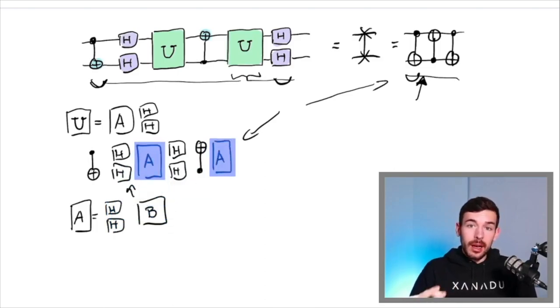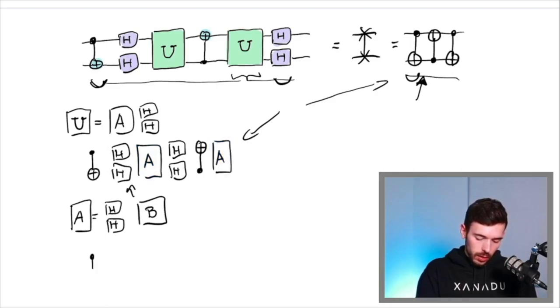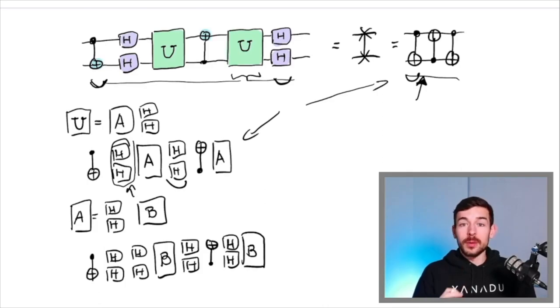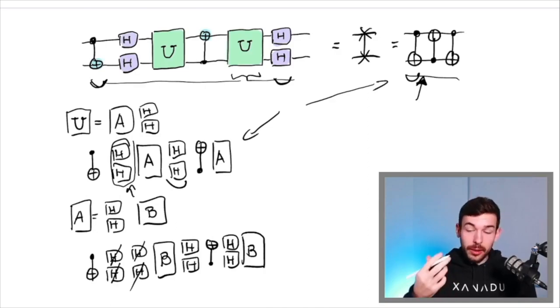If we do that and we introduce this new operator in our previous template, we are going to get that now we have something like CNOT, Hadamard Hadamard. Then we apply A, it means Hadamard Hadamard B. Then we apply these Hadamards. After that, the CNOT. And then we apply B, that again is Hadamard Hadamard and the gate. So we have this expression that you can see here, that actually, with the same idea, we can remove here, we can remove here, the Hadamards are going to cancel. So we have something closer and closer to our final solution.